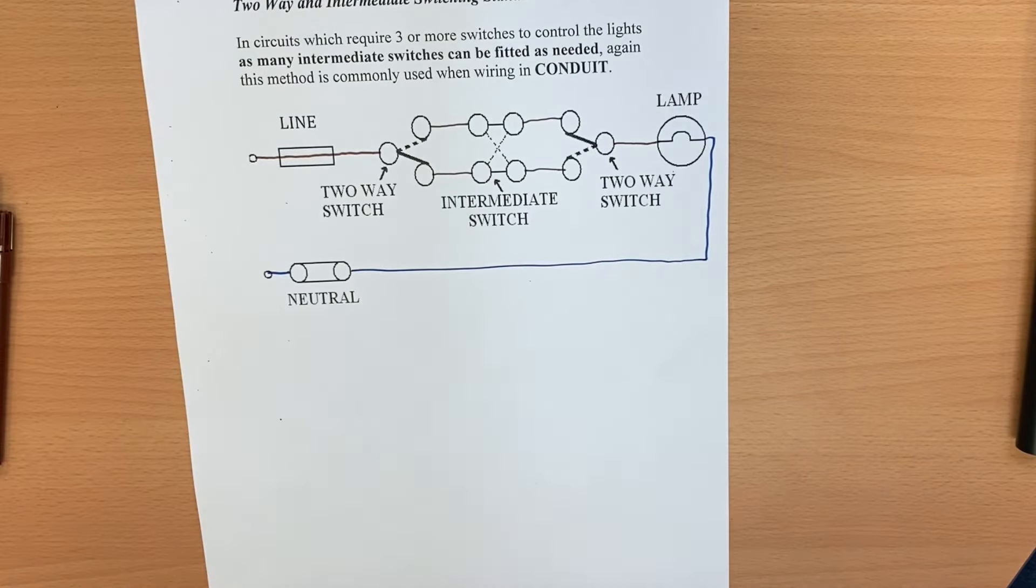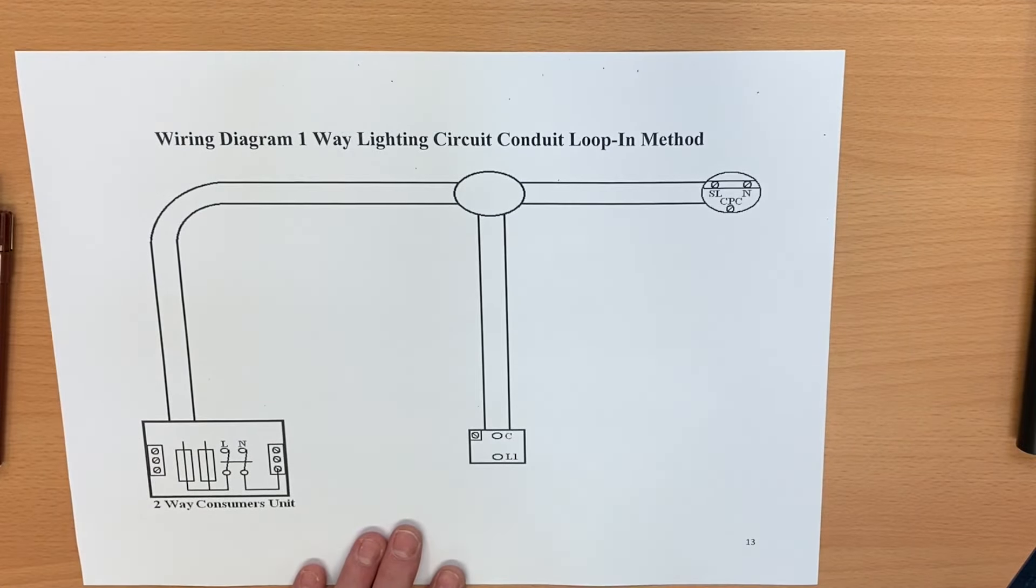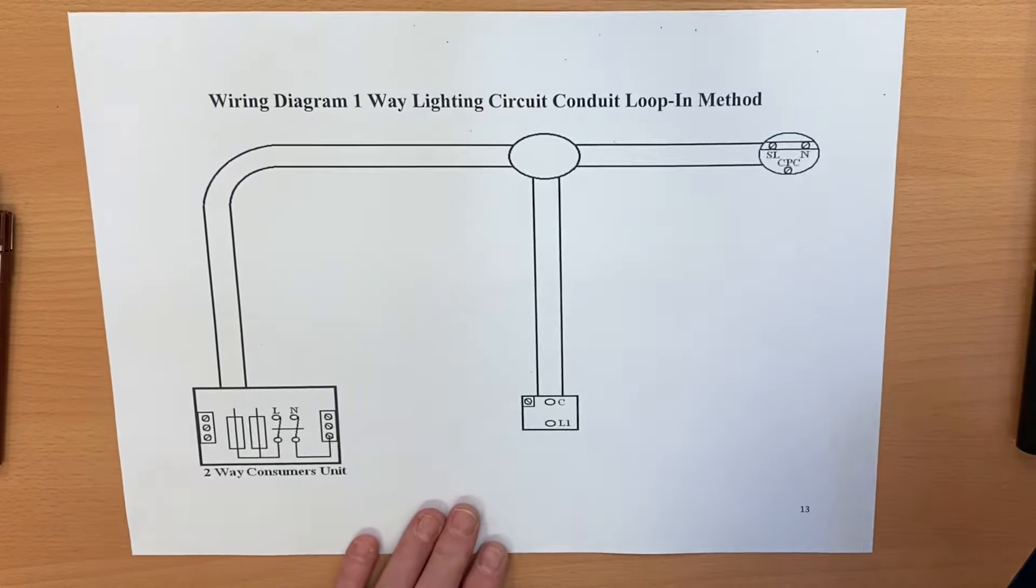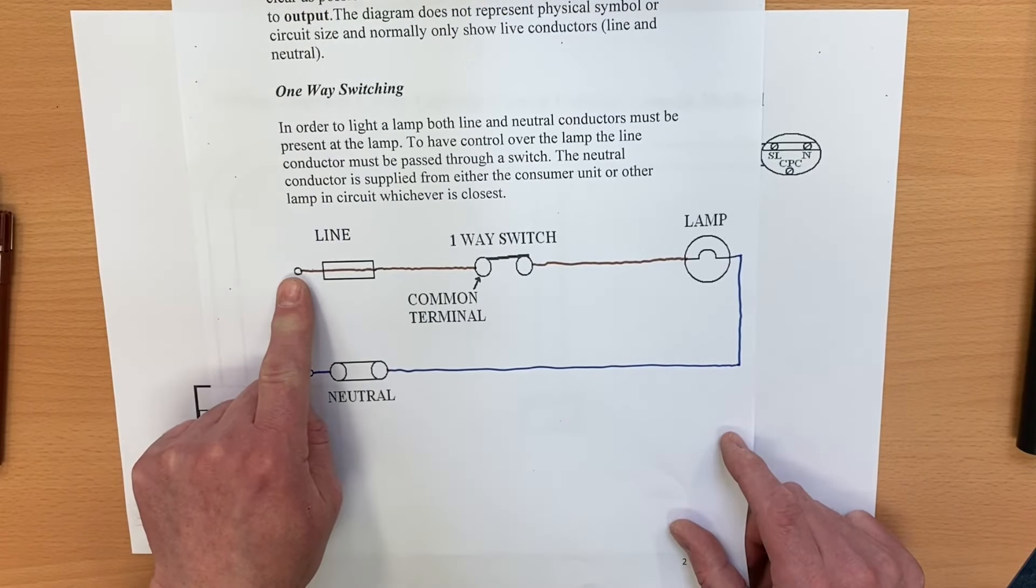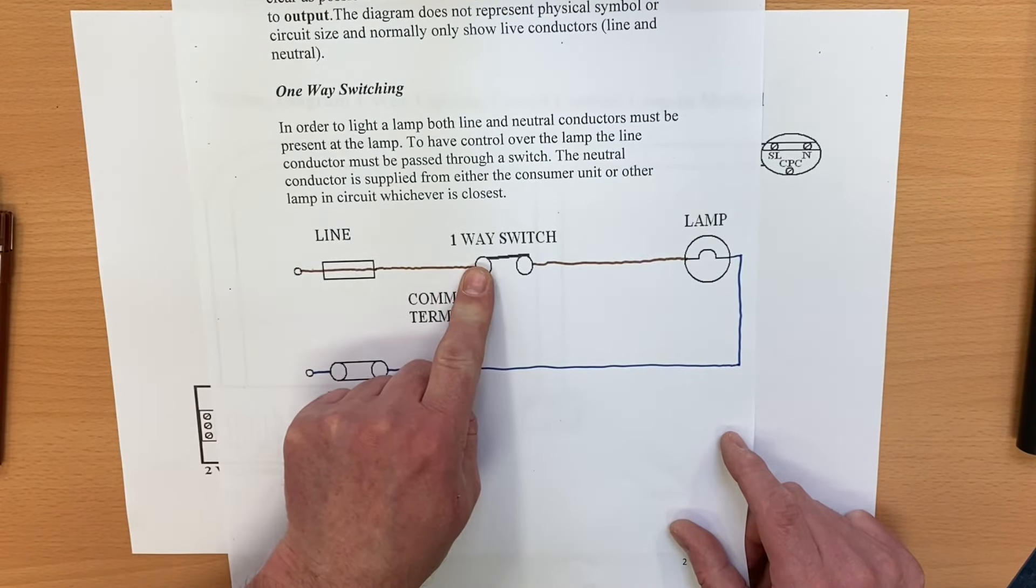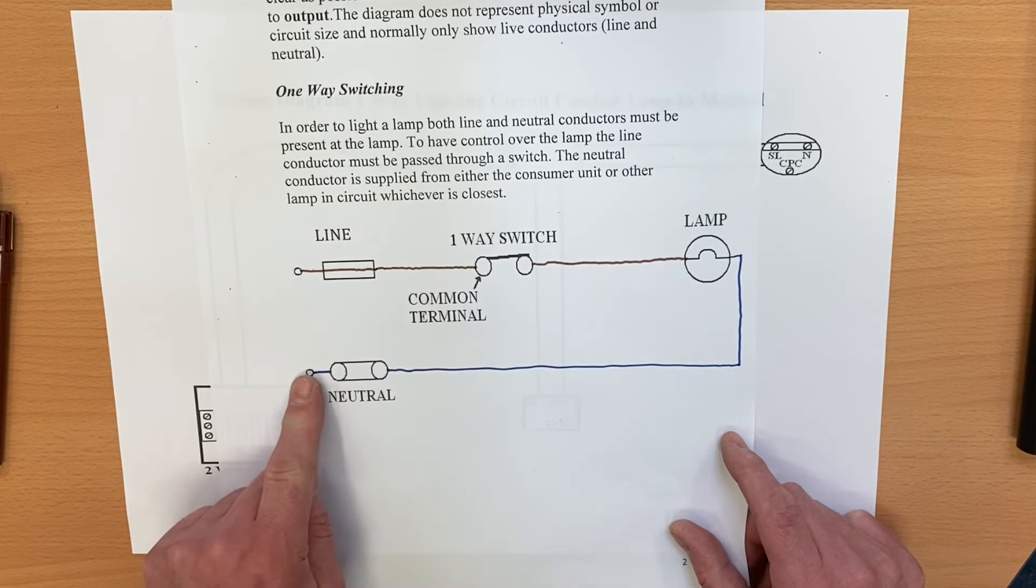Let's do one of them in this video. This goes back to our one-way lighting circuit. We came from the consumer unit into the common of our switch, our one-way switch, out of L1 to our lamp, and we brought the neutral straight from the consumer unit to the lamp itself.